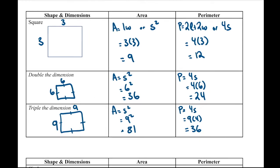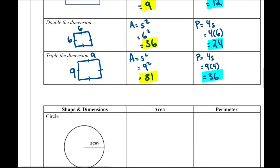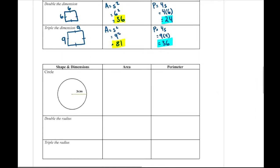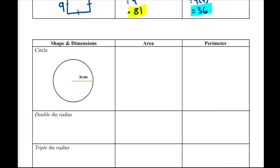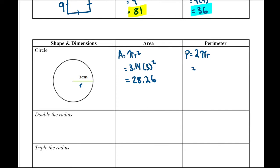We can start to see a relationship — what happens when we double and triple — and hopefully we start to see a pattern. Let's look at a circle with a radius of three. Area equals pi r squared: 3.14 times nine gives us 28.26. For perimeter or circumference, two times pi times r — two times 3.14 times three — gives us 18.84.